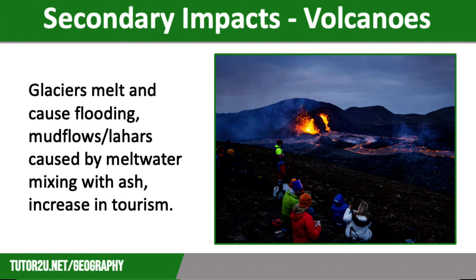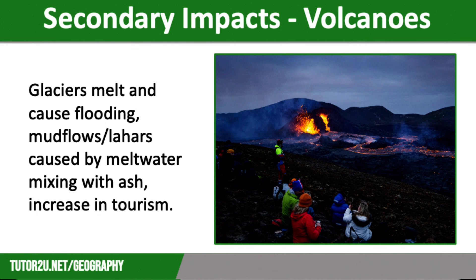Volcanic eruptions can cause glaciers to melt, leading to flooding. The melt water from this could mix with ash to form lahars or mudflows, which would cause homes to be covered — these are secondary impacts. However, there could also be an increase in tourism as people flock to see the eruption, especially in an effusive, non-violent eruption like the one seen in Iceland in spring 2021, pictured on screen. Here, people pay lots of money for helicopter trips over the crater — so this is a secondary impact, but it is a positive one.